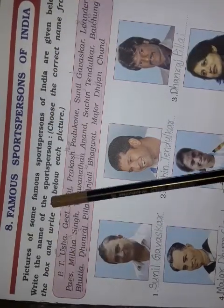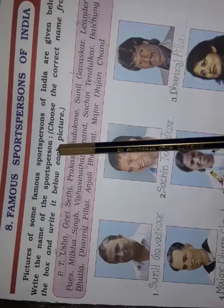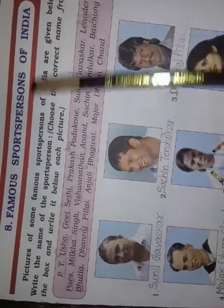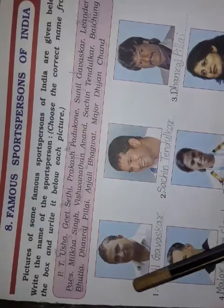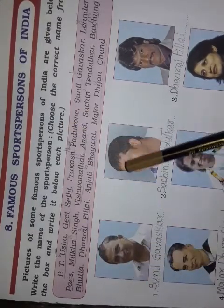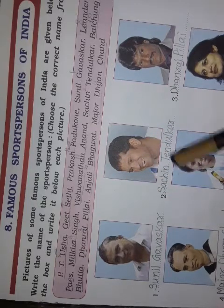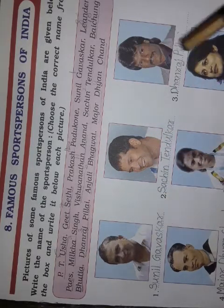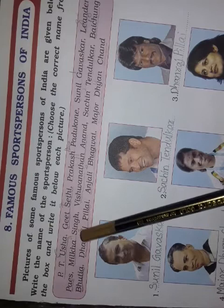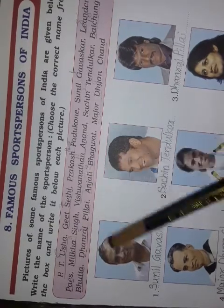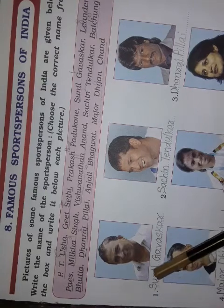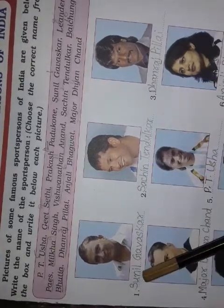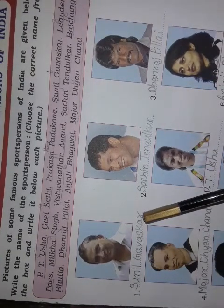Pictures of India's sports persons are given below. Write the name of the sports person. Choose the correct name from the box and write it below each picture. Here is India's sports persons' names, pictures, and names written in the table. Now choose to write it. Number 1: Sunil Gavaskar, cricket player.